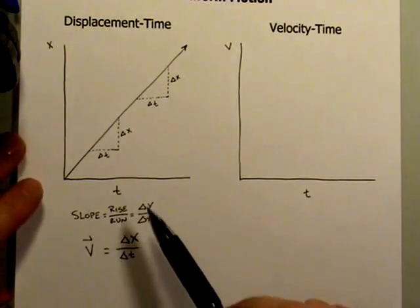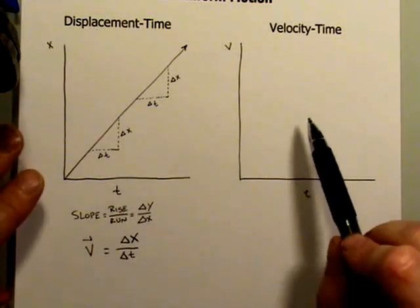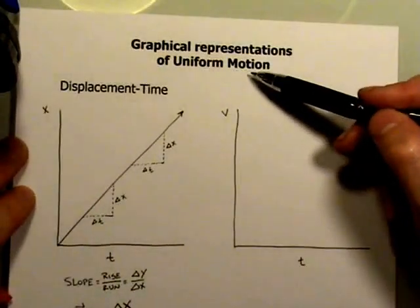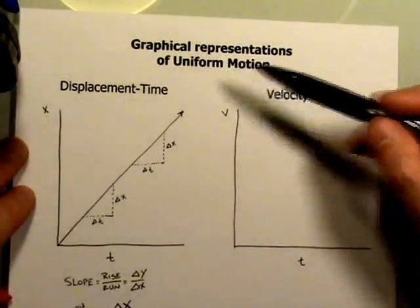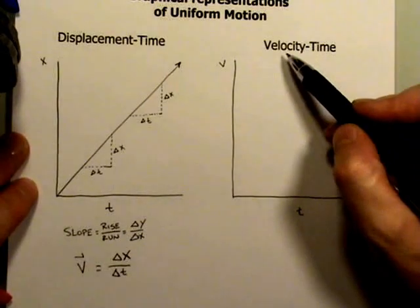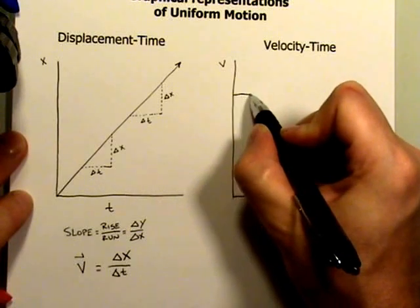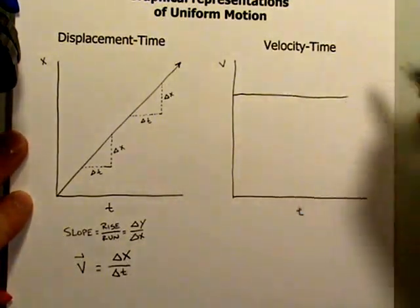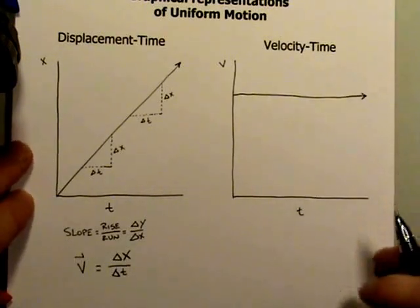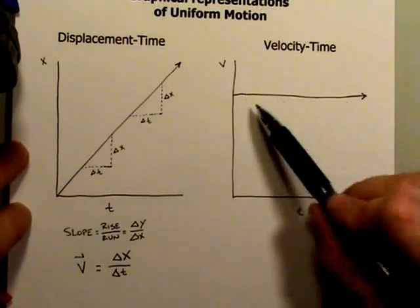Now let's translate how this displacement-time graph looks into what the velocity-time graph would look like. We're talking about uniform motion — the object is not changing its velocity. So because this is a graph of velocity versus time and our velocity is not going to change, what we'd see is a horizontal line. An object traveling with constant velocity has a velocity-time graph that looks like a horizontal line.